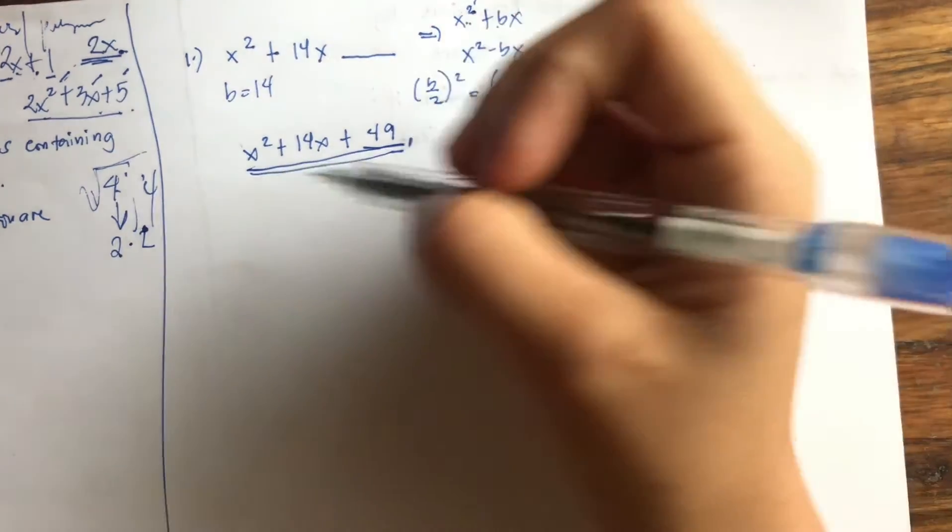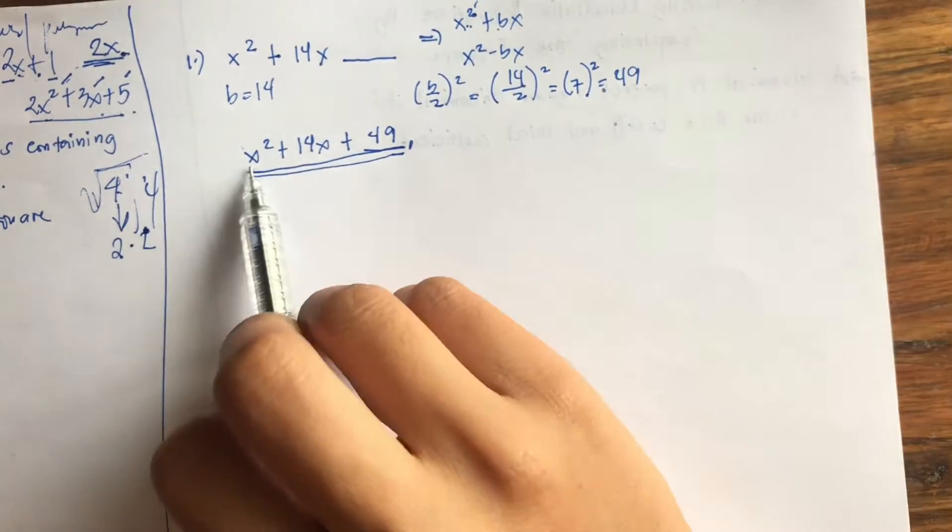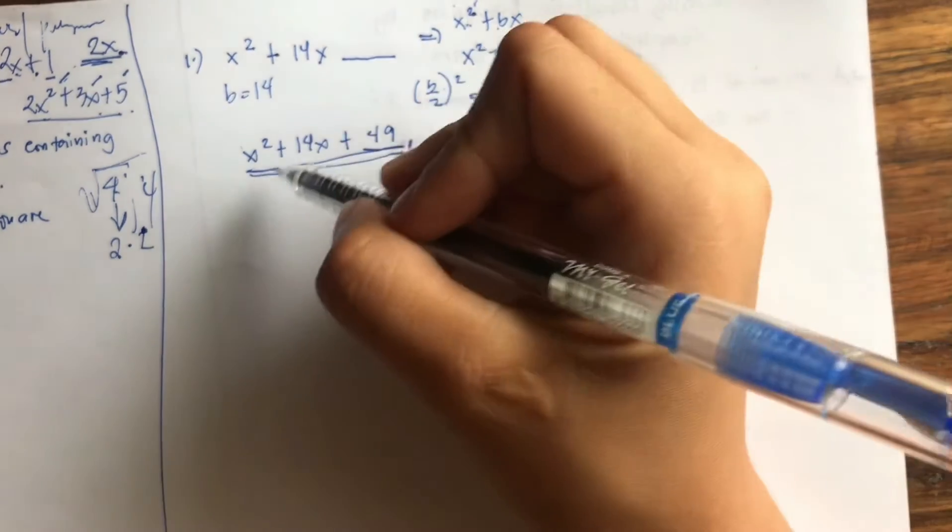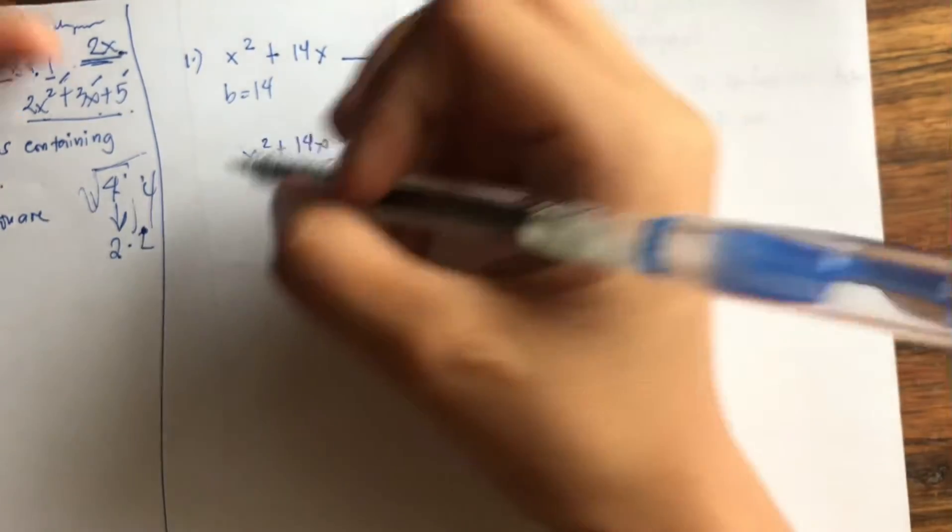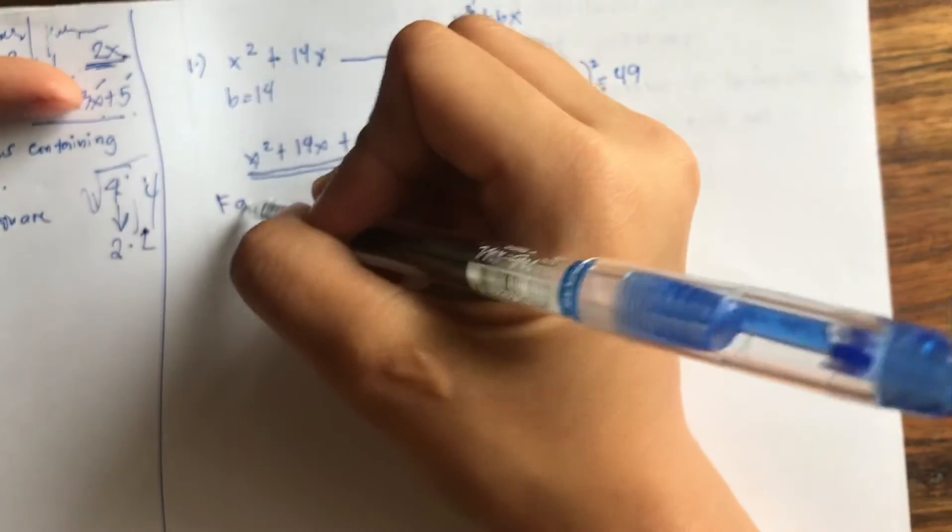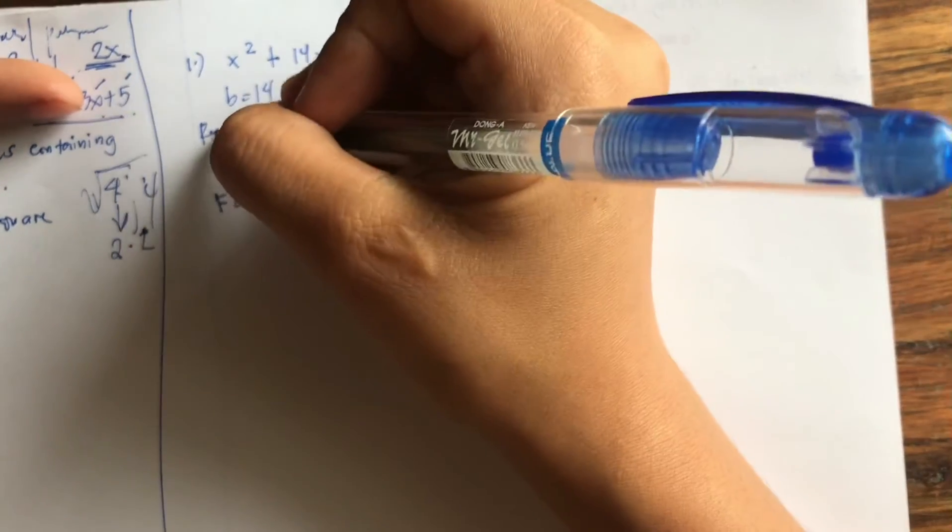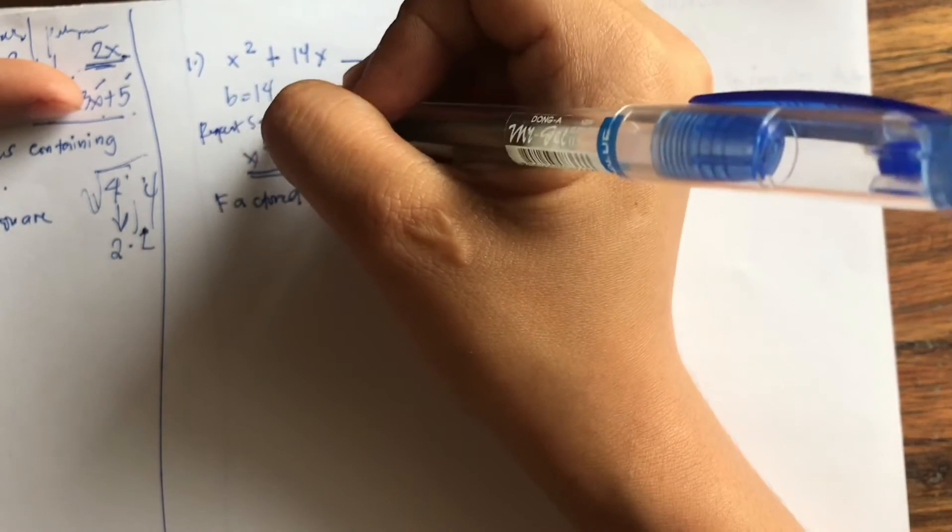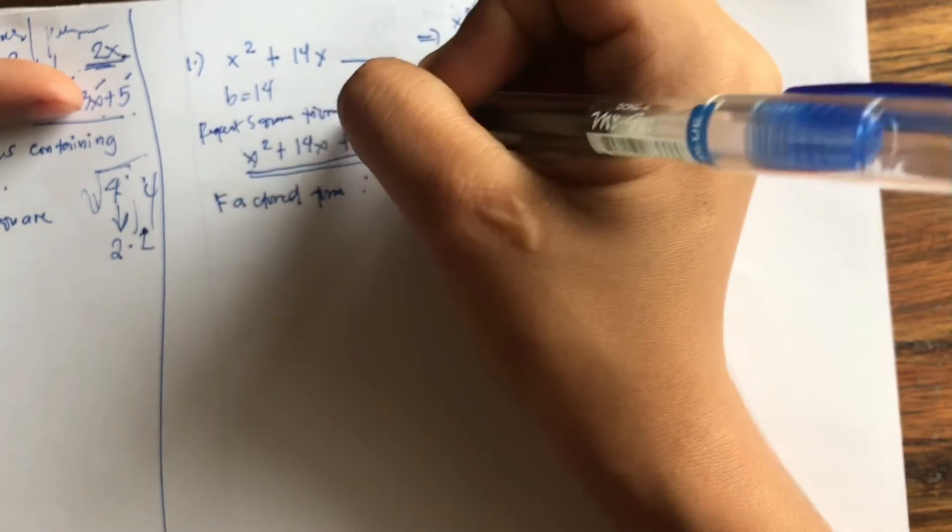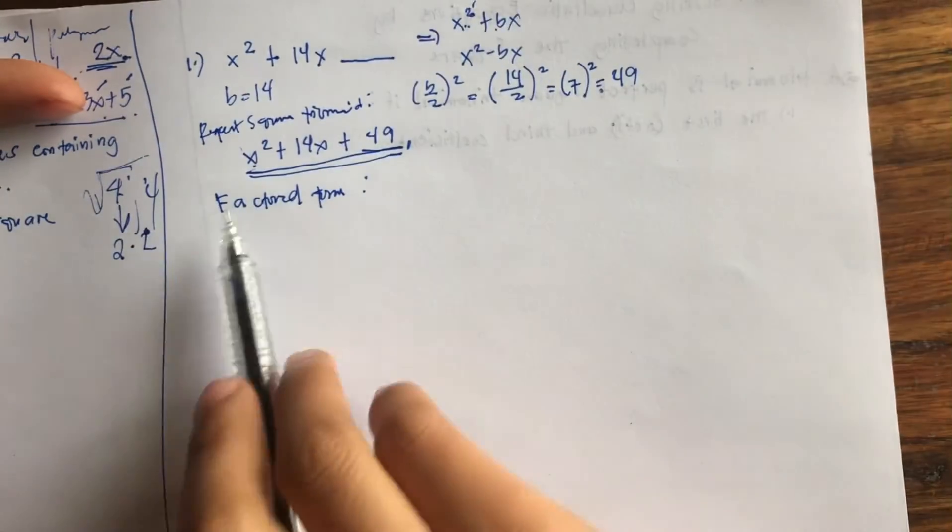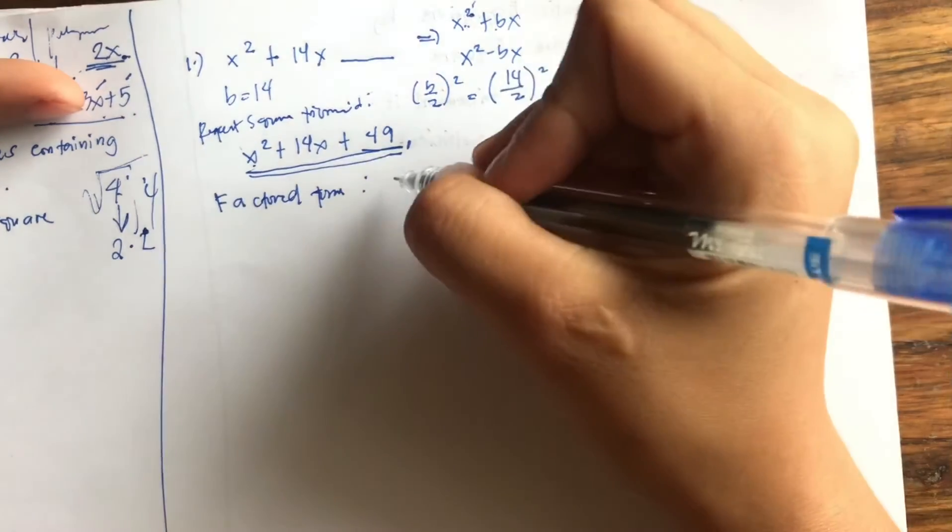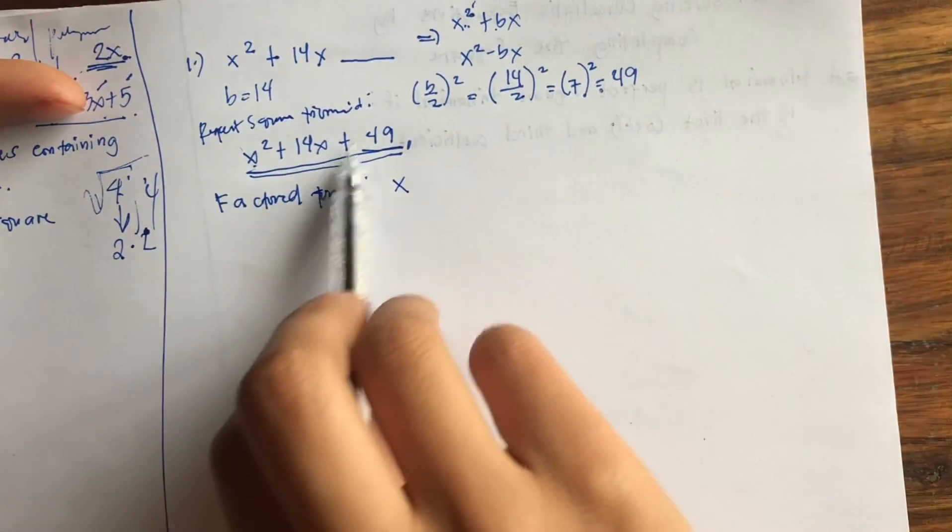Now we need to get the factor. So this is our perfect square trinomial. Now how do we get its factor? Find the roots of the first and last term. We have our factored form. This is the perfect square trinomial.